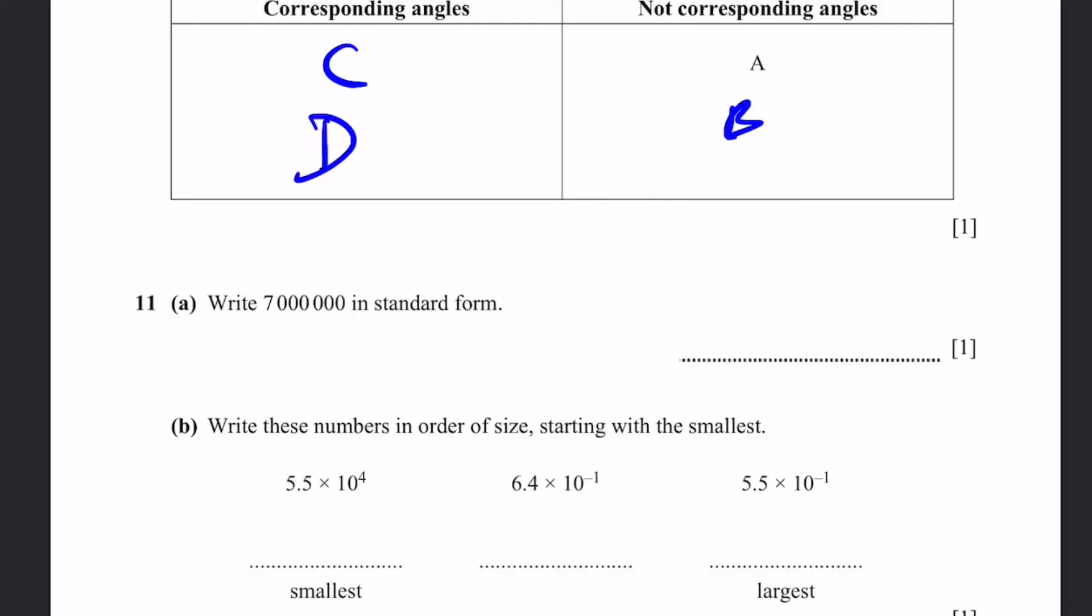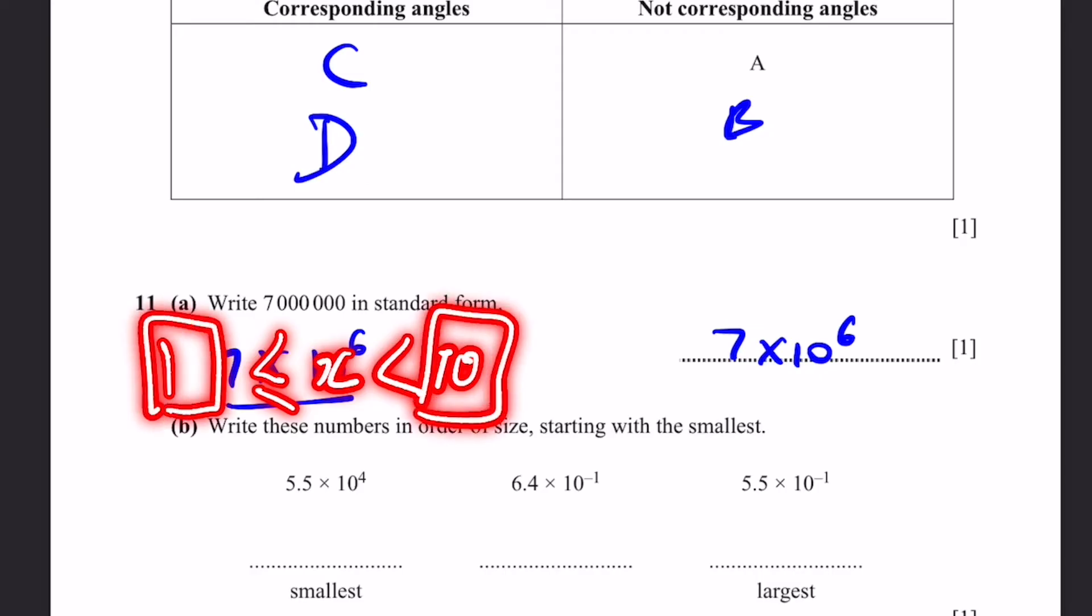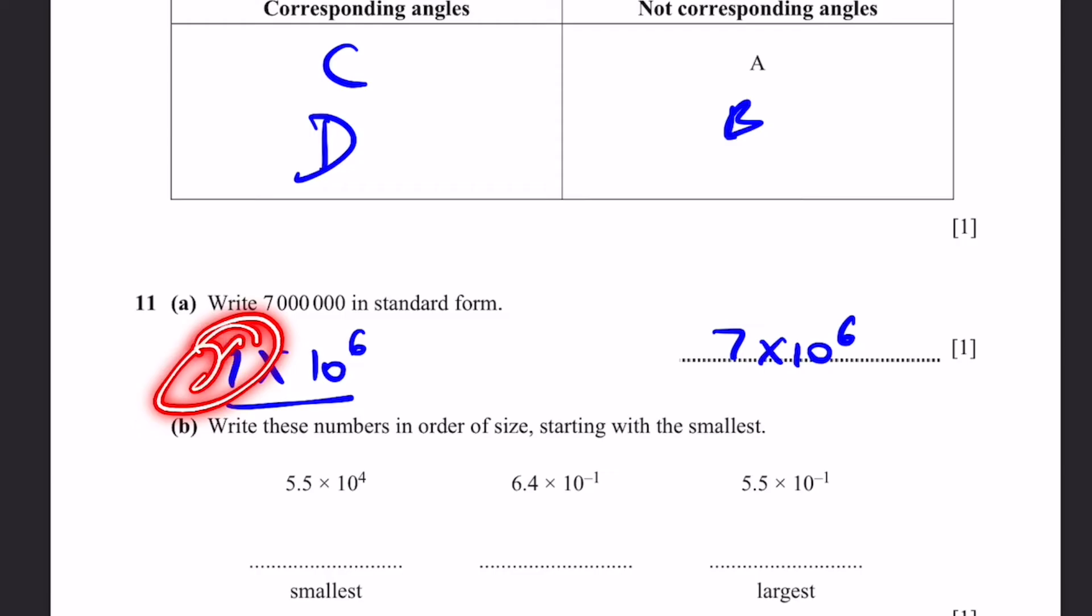Question 11 A. Write 7 million in standard form. 7 million is simply 7 times a million. And this million can be written as 10 to the power of 6, since it's 6 zeros, right? Therefore, 7 times 10 to the power of 6 is going to be standard form. Since 7 is between 1 and 10, this x value has to be between 1 and 10, inclusive of 1, exclusive of 10. So, I said x, it means this number, times 10 to the power of y. y can be anything, but x has to be a number between 1 and 10. That's the answer.